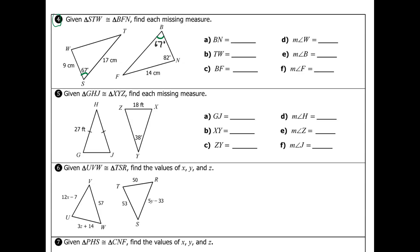We also know that angle T is congruent to angle F — I'll give those two marks — and angle W is congruent to angle N. I'll give those three marks each. That tells me that angle W is also 82 degrees.